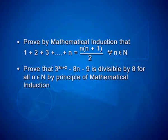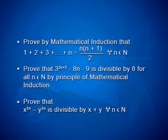Second question was: prove that 3 raised to 2n plus 2 minus 8n minus 9 is divisible by 8, for all n belonging to N, by principle of mathematical induction. Third question was: prove that x power 2n minus y power 2n is divisible by x plus y, for every n belonging to N.